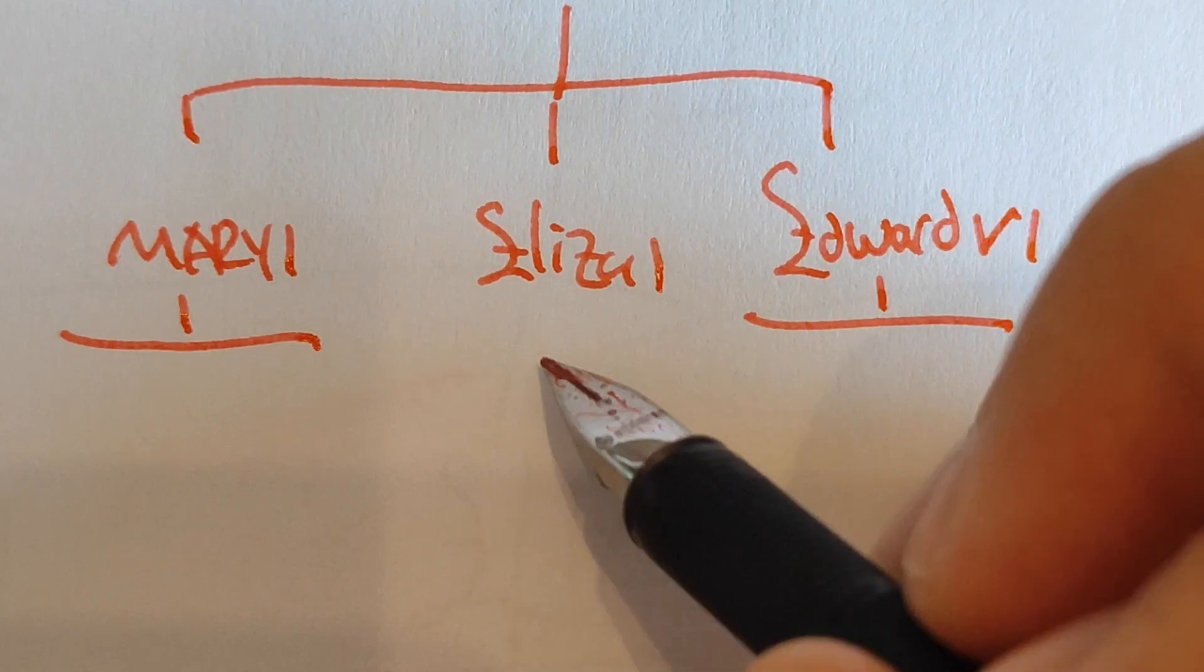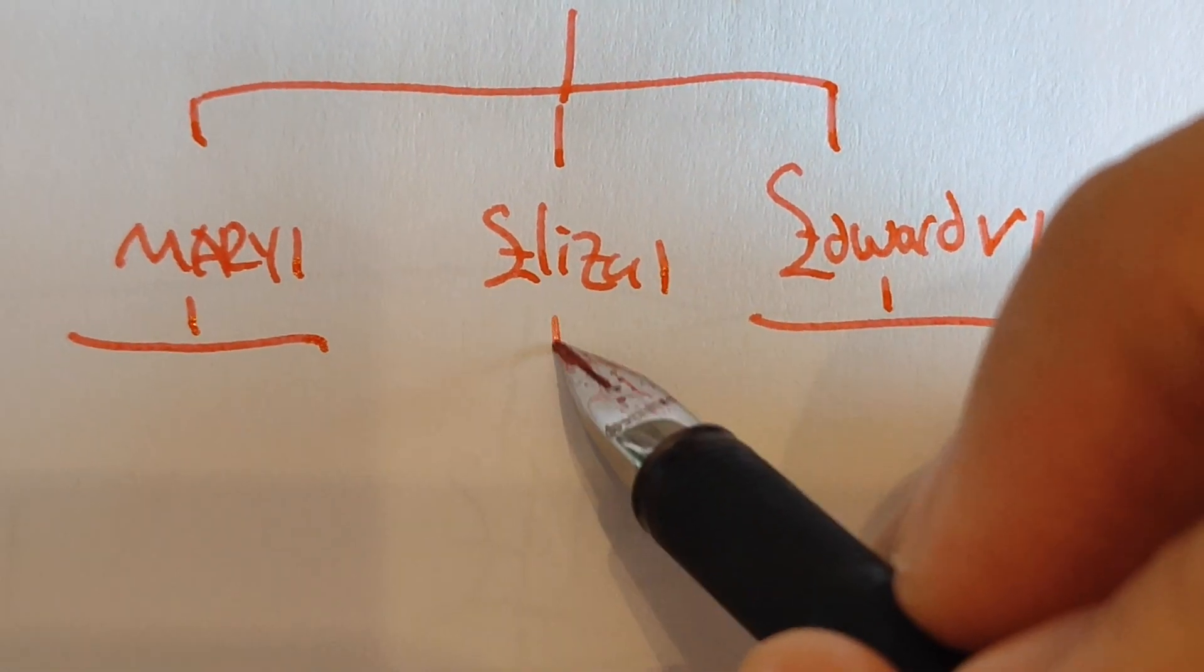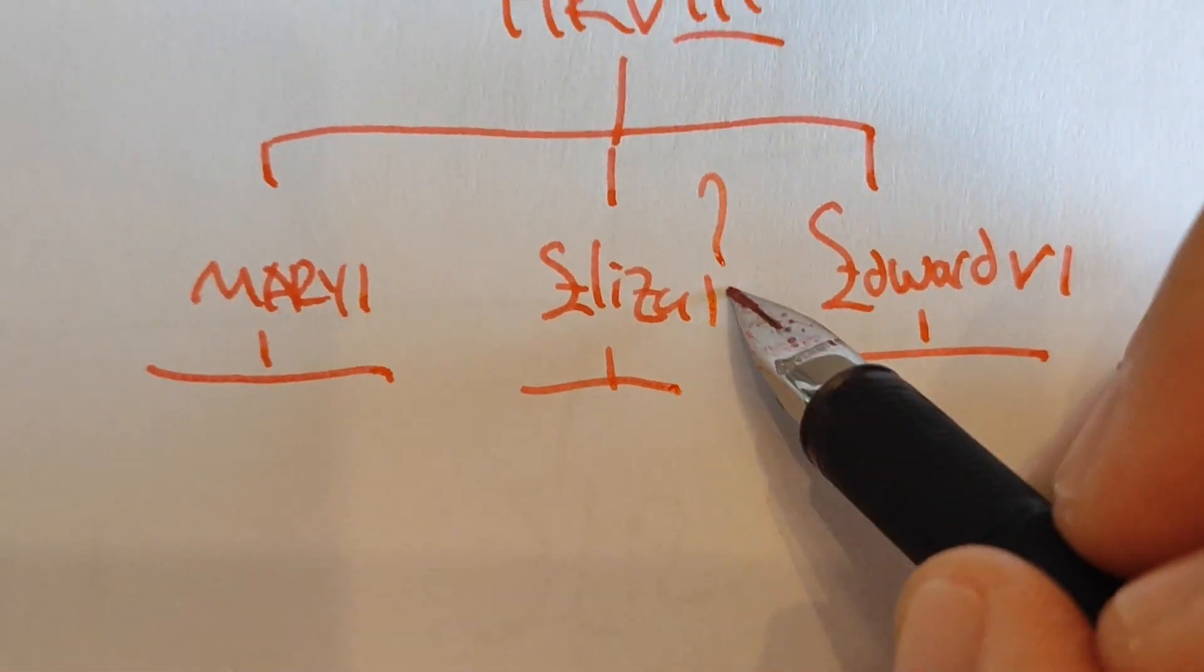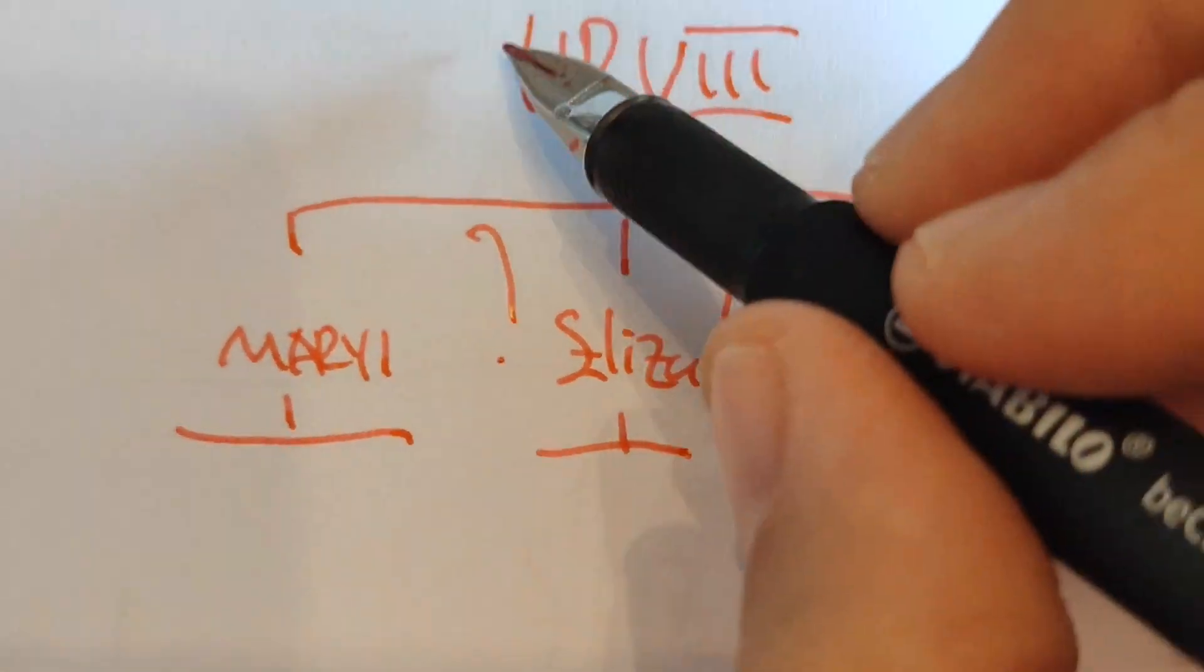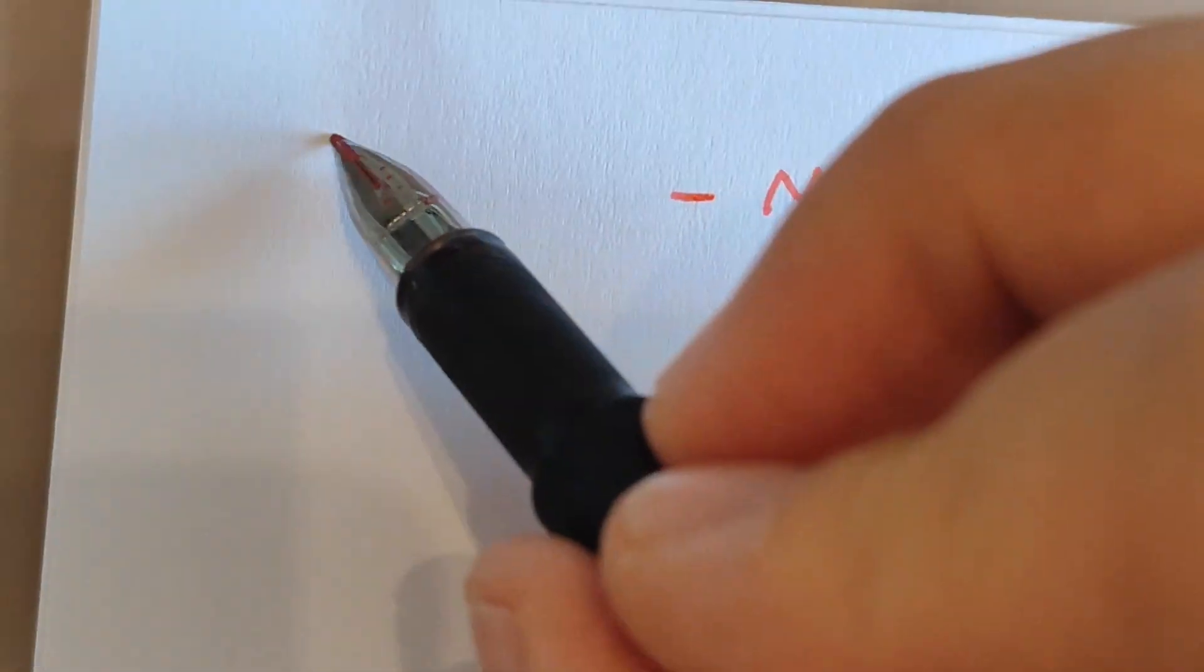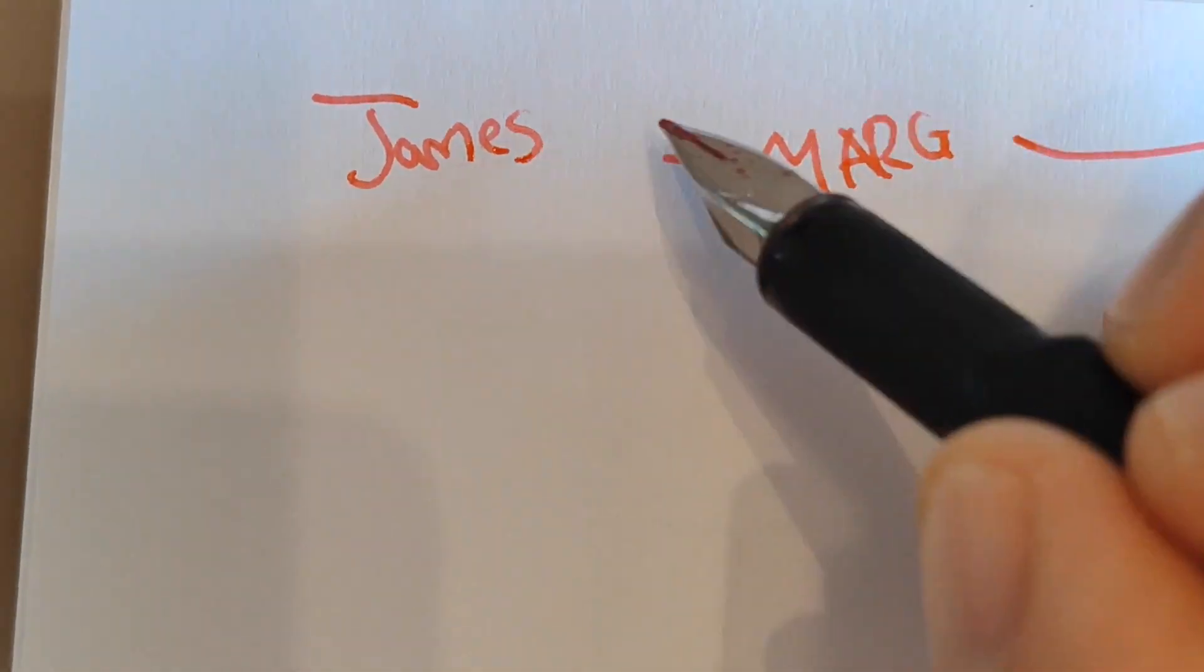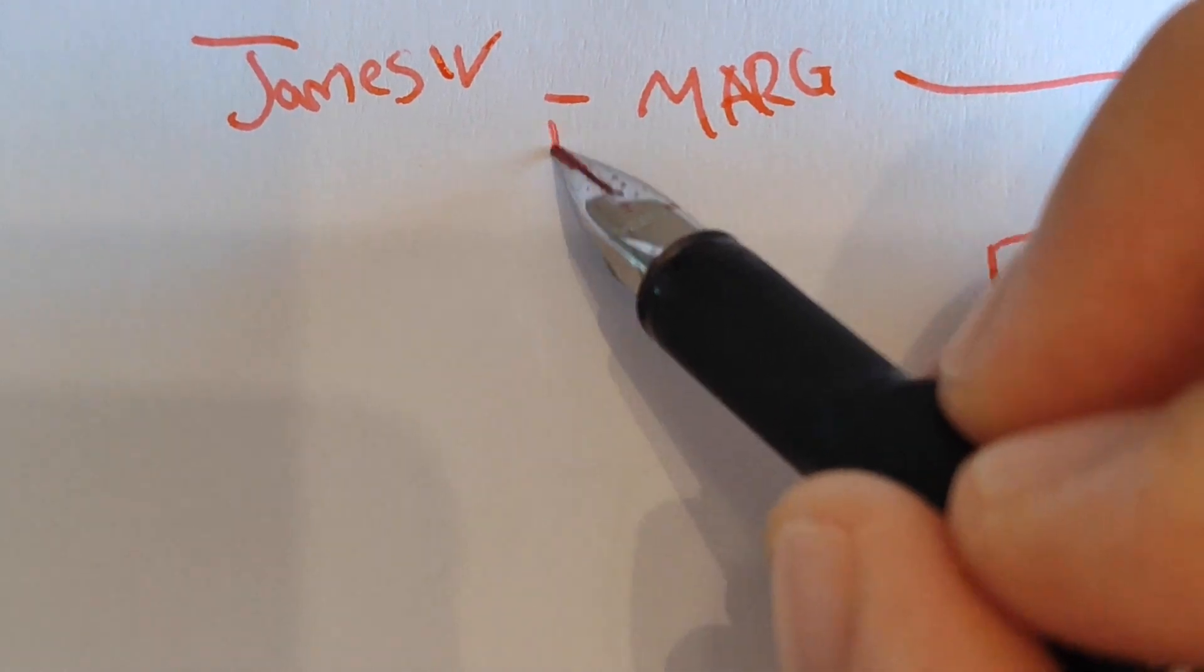So she also unfortunately died childless, which meant that they were in a bit of a pickle. What's going to happen next? We actually need to go back up to Henry VIII, who had a sister called Margaret, who married someone called James IV, the King of Scotland. They had a son called James V.